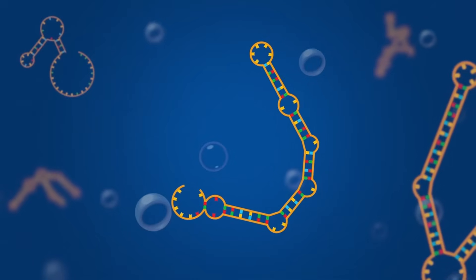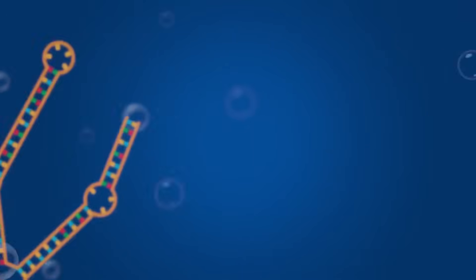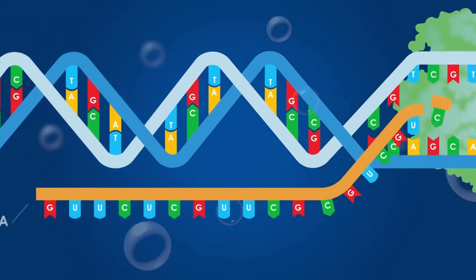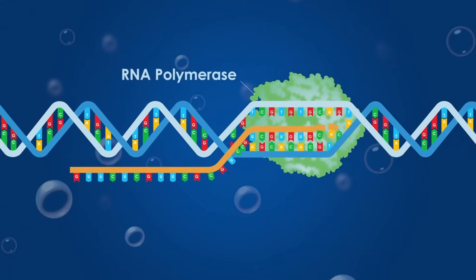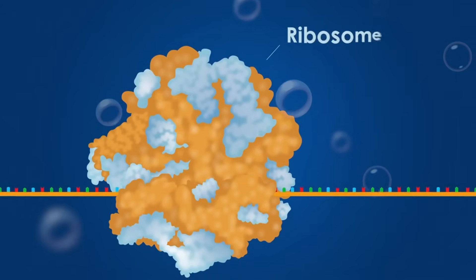RNA molecules are like tiny machines, which help carry out many different biological functions. Messenger RNA is the most well-known type of RNA, as it carries the genetic code from DNA to the ribosomes where it's used as a template to synthesize proteins.